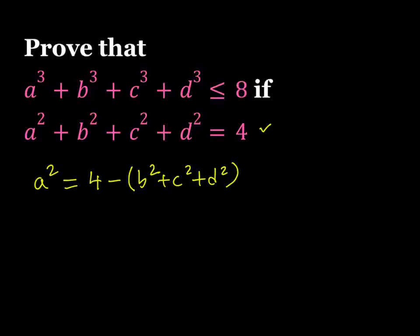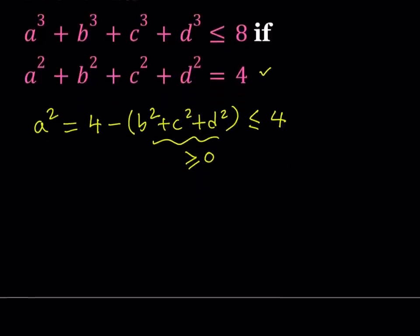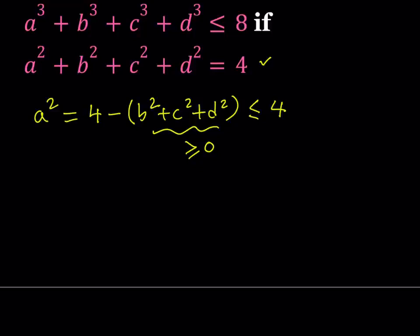Now, this tells me the following information. b squared plus c squared plus d squared is sum of squares, and that can never be negative. In other words, this expression is always greater than or equal to 0. If b, c, d are all 0, obviously this sum is going to be 0. So this tells us that we're subtracting a non-negative quantity from 4. So the answer is supposed to be less than or equal to 4. If the sum is 0, this is 4. If the sum is greater than 0, then the difference is going to be less than 4. This gives us a very important piece of information which we can generalize and use. This tells us that a squared is less than or equal to 4.